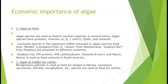Algae species mein bhar poor maatra mein protein, vitamin A, B, C, E, lipids aur minerals paye jaate hain. Laminaria species is the important edible seaweed in Japan and the food item 'kombu' is prepared from it. Onori from Monostroma and Asakusa Nori from Porphyra are prepared in different countries.